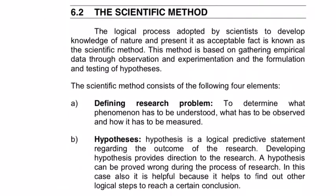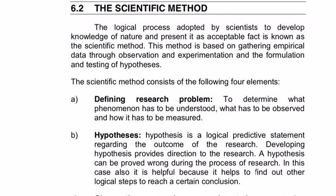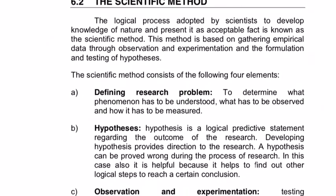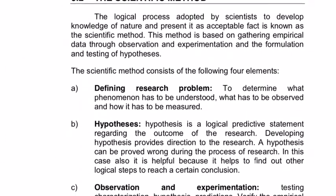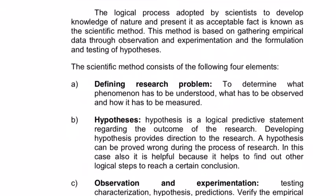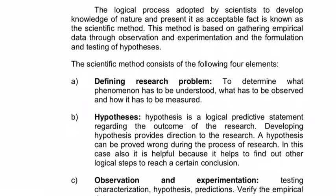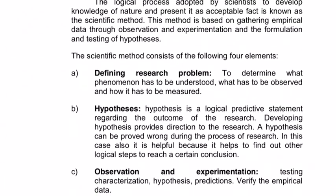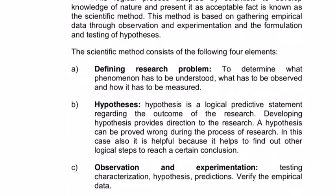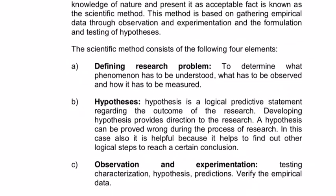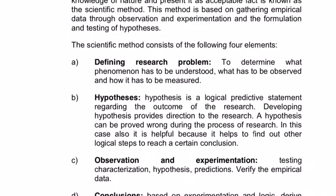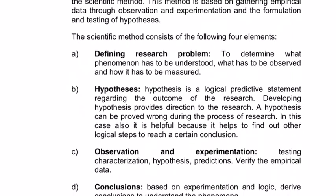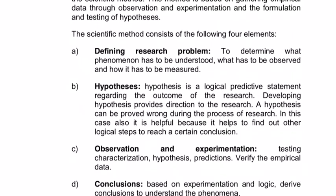6.2 The Scientific Method. The logical process adopted by scientists to develop knowledge of nature and present it as acceptable fact is known as the scientific method. This method is based on gathering empirical data through observation and experimentation and the formulation and testing of hypotheses. The scientific method consists of the following four elements. First, defining the research problem: to determine what phenomena has to be understood, what has to be observed and how it has to be measured.